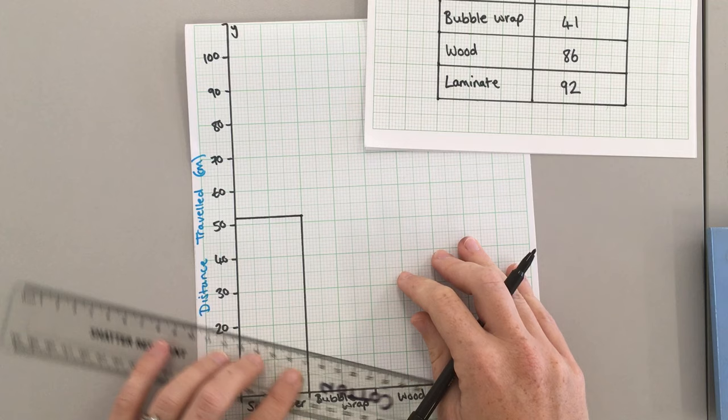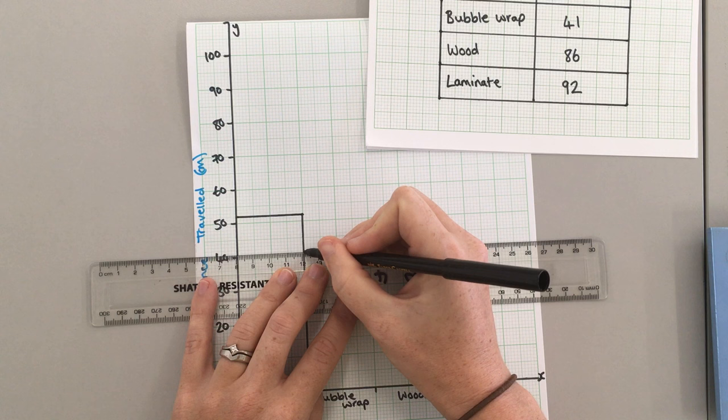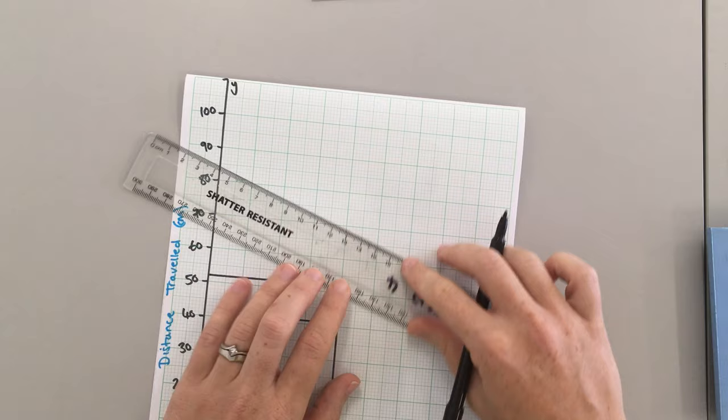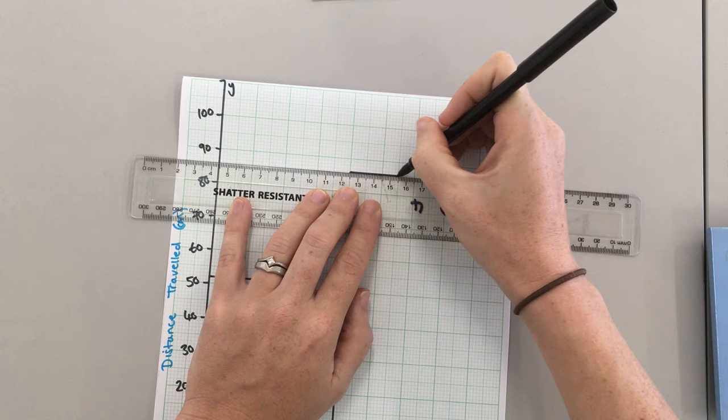For bubble wrap, 41. So again, I find 41, draw a line across, join it up to my x-axis. Wood went up to 86. So there we go, 86.